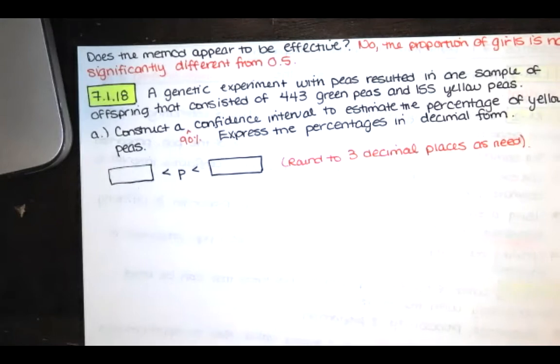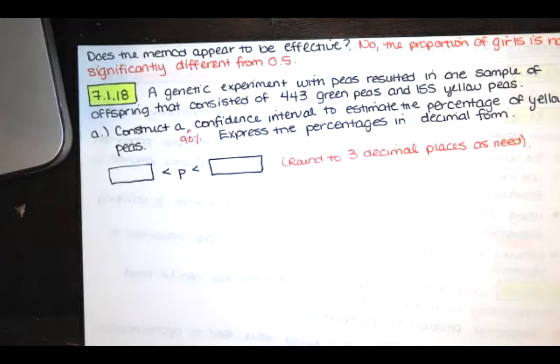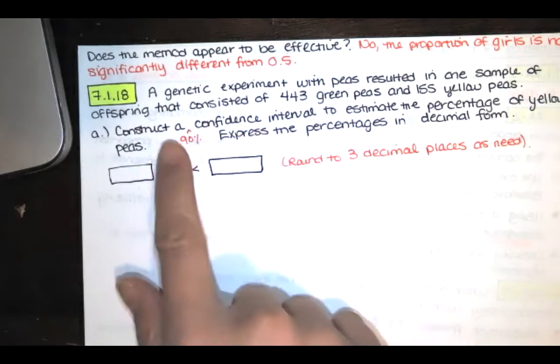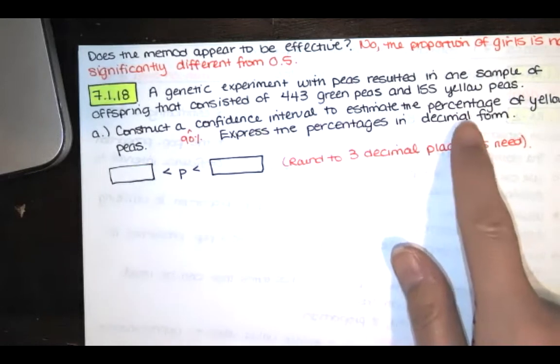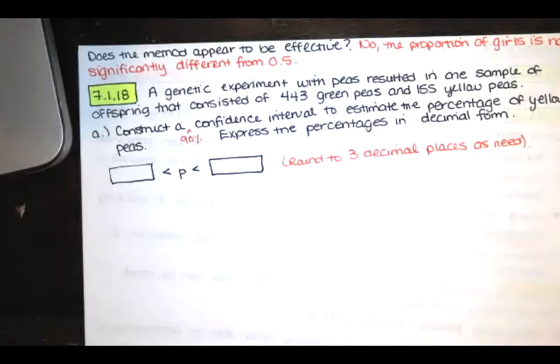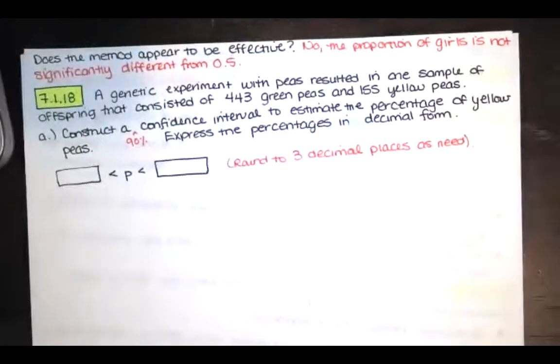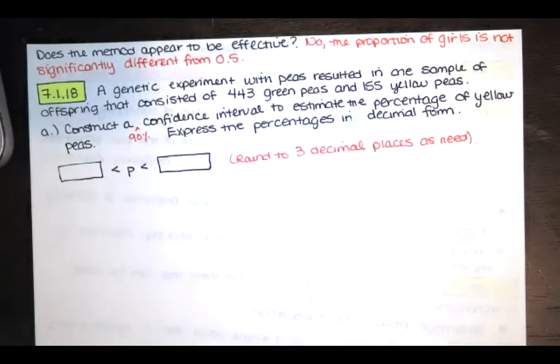The second requirement is that the conditions for the binomial distribution are satisfied. So there's a fixed number of trials, and the trials are independent. There are two categories of outcomes, and the probabilities remain constant for each trial. Here we're asked to construct a confidence interval to estimate the percentage of yellow peas. So we do have two categories. The peas are either yellow or they're not yellow.